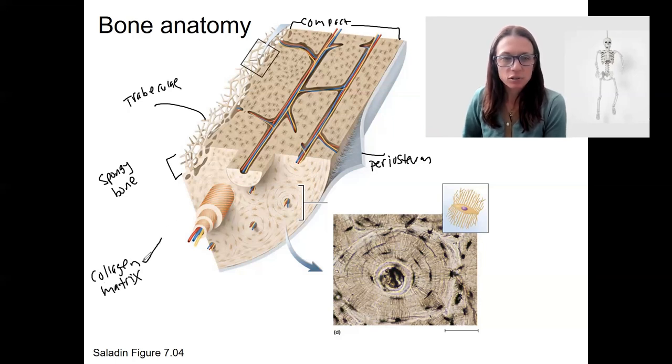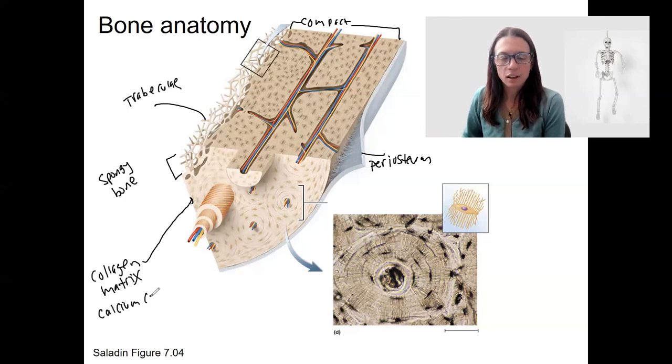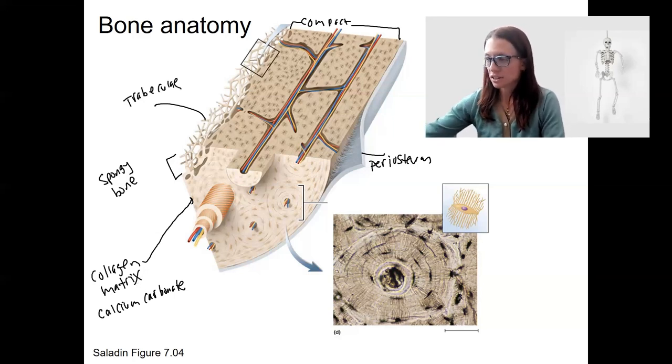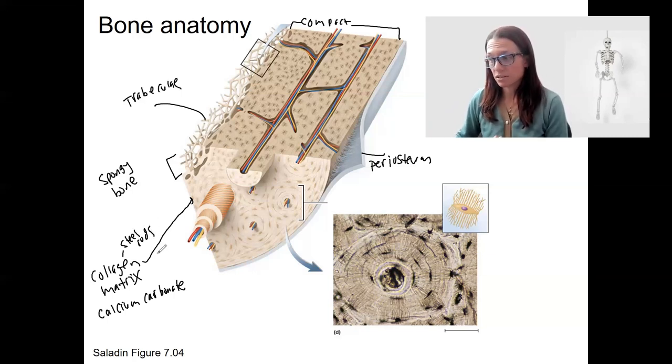So a collagen matrix, but then it has very little ground substance and the ground substance that there is has calcium carbonate and some calcium phosphate mineral infusion. So the minerals that surround the collagen matrix make it strong, flexible and shatter resistant. It's kind of like having steel rods surrounded by cement or concrete. It's a very strong structure.